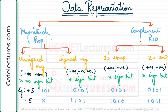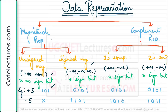In magnitude representation, there are two ways to represent. One is unsigned magnitude, which can only be used for positive numbers — it does not have any sign bit. Then there is sign magnitude representation. In this, you can represent both positive and negative numbers because we have included a sign bit. You include a 1 for a negative number as the MSB, or you include 0 at the MSB for a positive number.